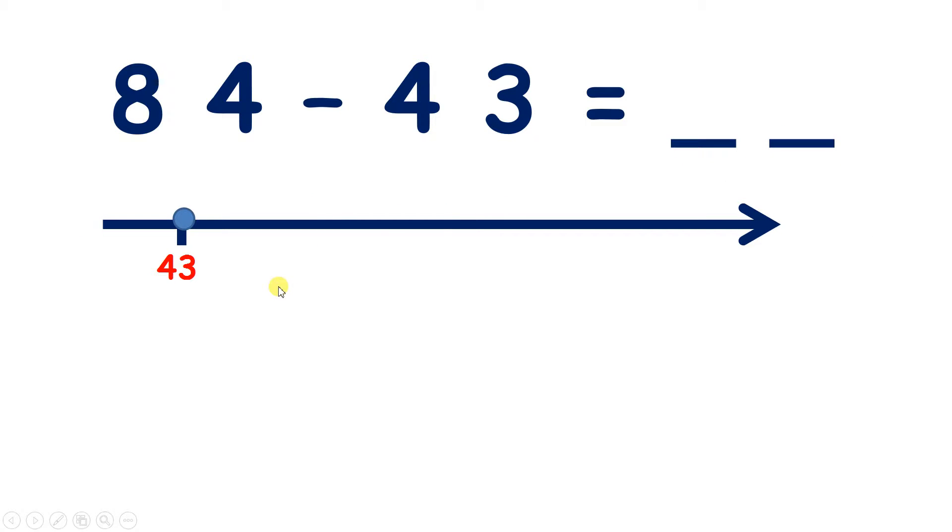But perhaps we could do this in fewer steps. So if you add 40 all in one go you get to 83, so you're adding four tens to get to 83, and then one more gives you 84. So we have 41 because you've added one unit.